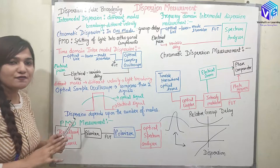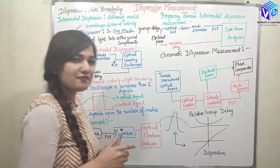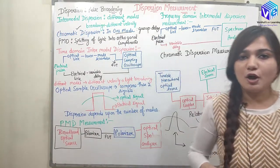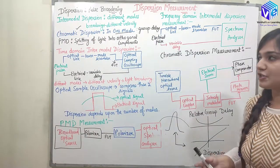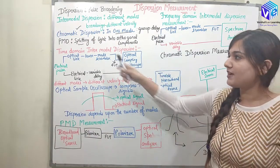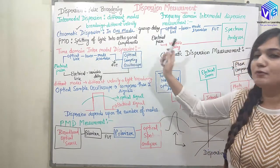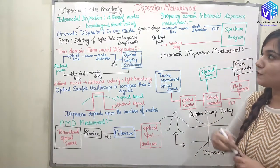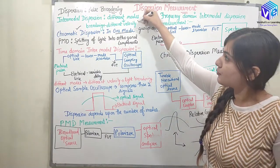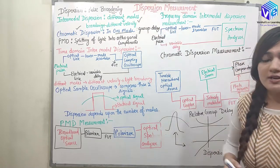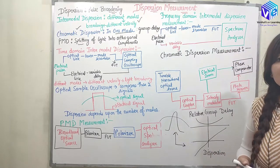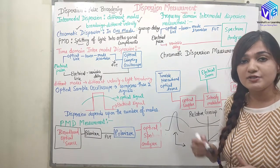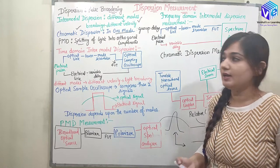So I hope you understood all the types of dispersion. Now we are going to talk about the measurements. First is time domain intermodal dispersion measurement. We have to see how in the time domain we can measure intermodal dispersion.